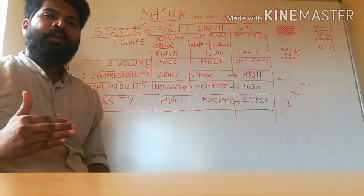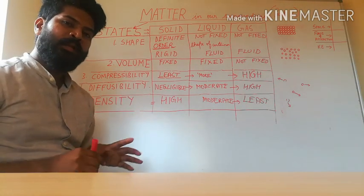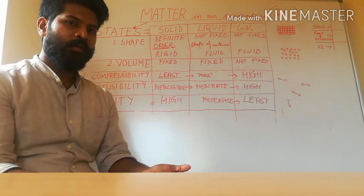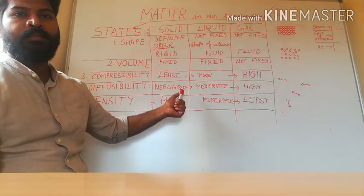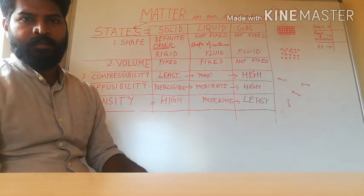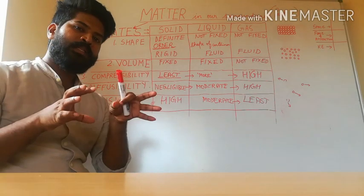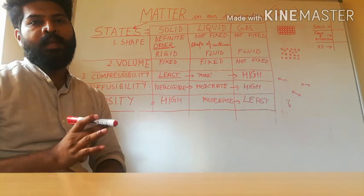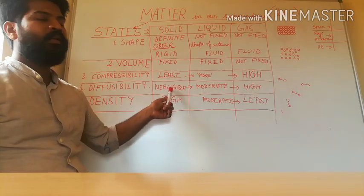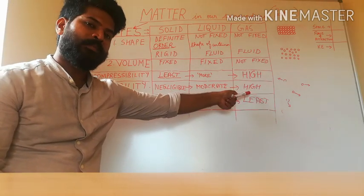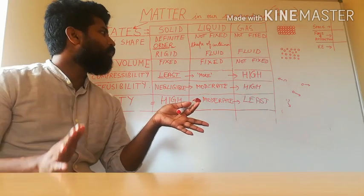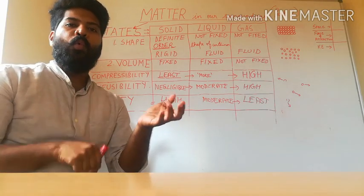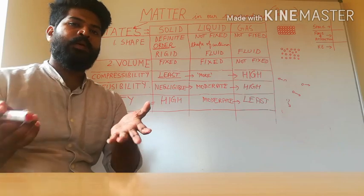The next point is diffusibility — the ability of diffusion. Diffusion is the intermixing of different particles on their own. Solids have negligible diffusion because their kinetic energy is very less, so they cannot move on their own. Gases have very high kinetic energy and can randomly move and mix very easily. For example, oxygen is present underwater because of diffusion — gases can easily diffuse underwater, which helps aquatic animals.